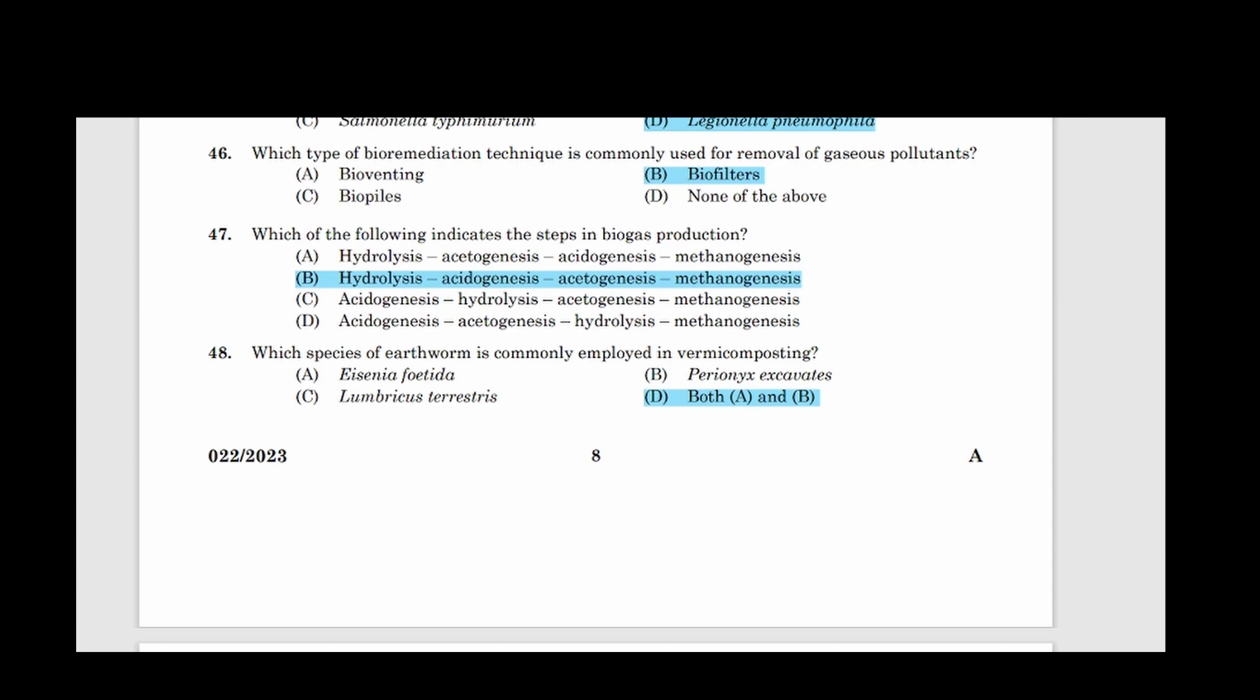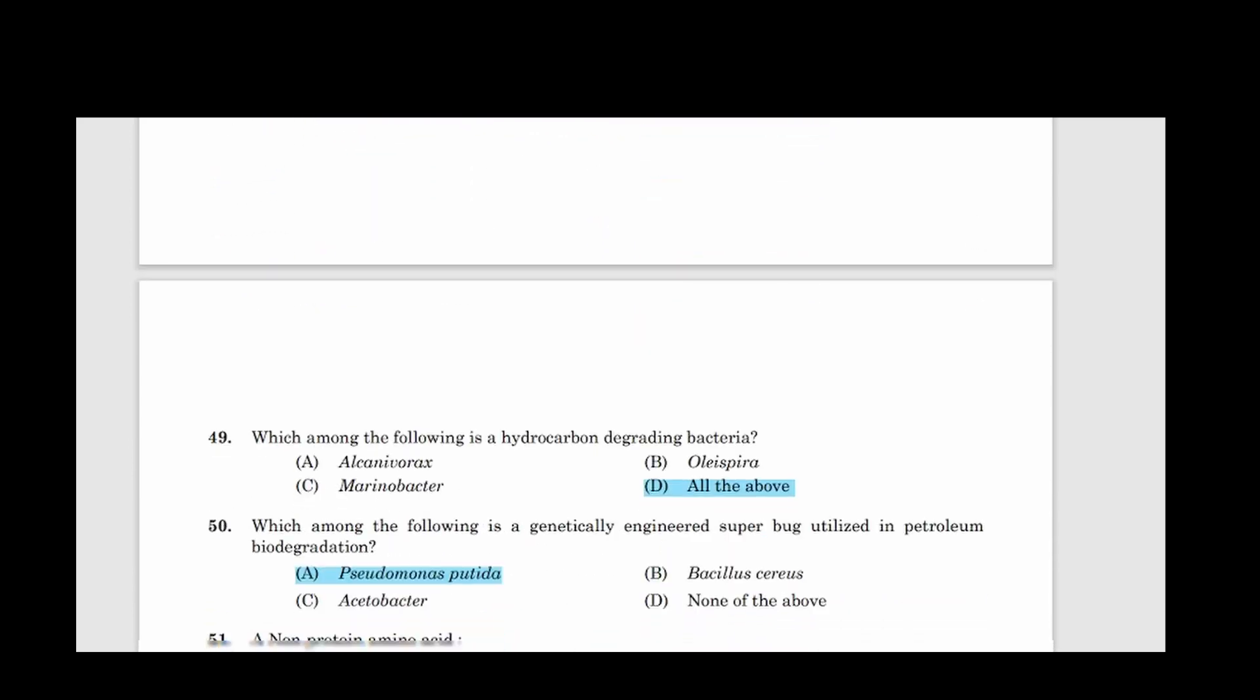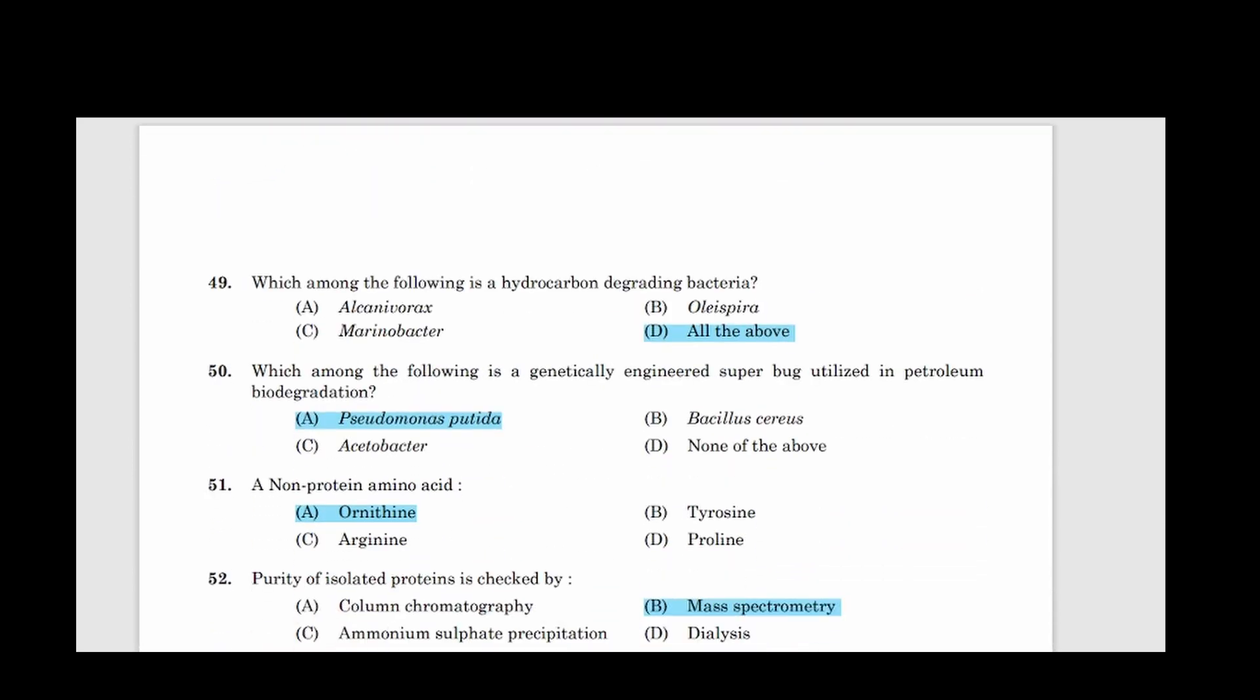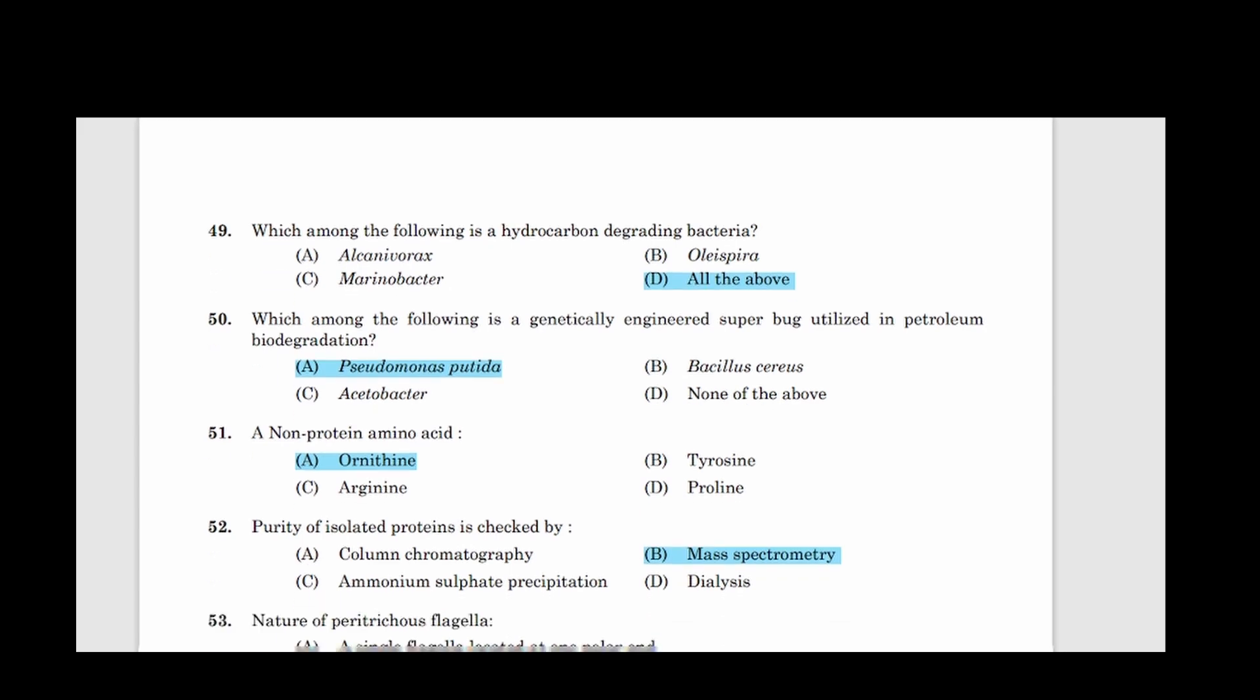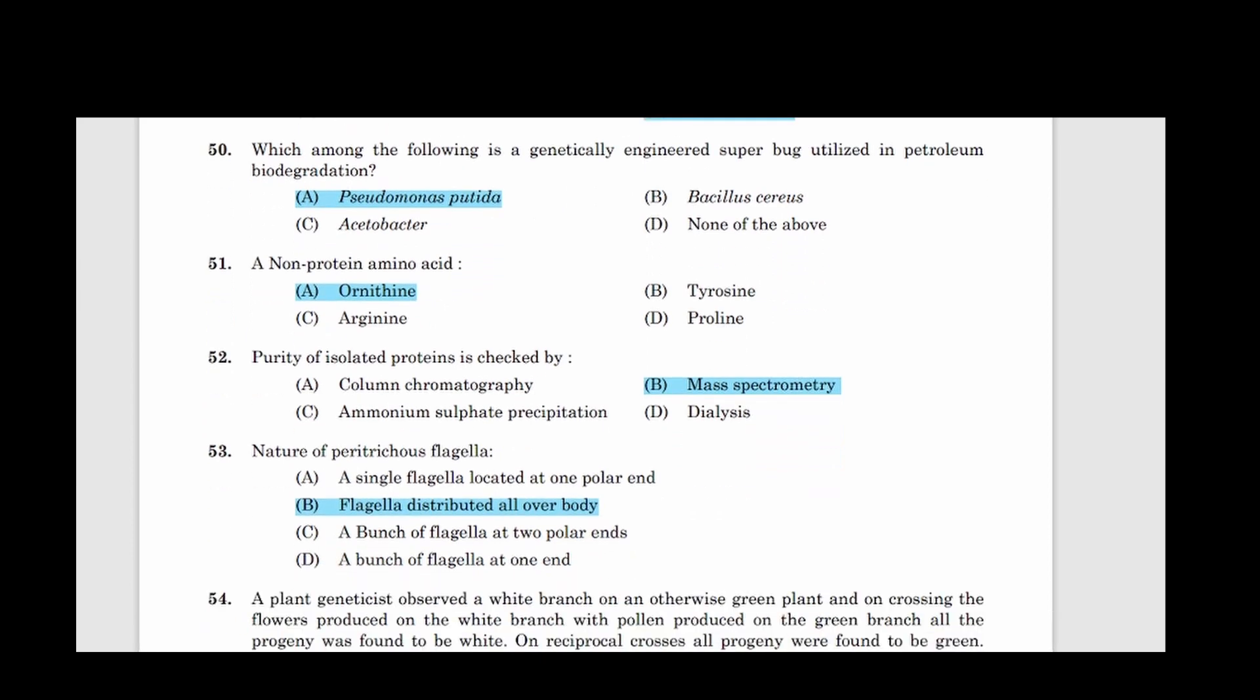Forty-eight: Which species of earthworm is commonly employed in vermicomposting? Answer option D, Both A and B. Forty-nine: Which among the following is a hydrocarbon degrading bacteria? Correct answer option D, All the above. 50: Which among the following is a genetically engineered superbug utilized in petroleum biodegradation? Answer option A, Pseudomonas putida. 51: A non-protein amino acid. Answer option A, Ornithine.